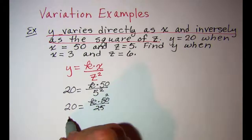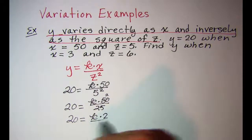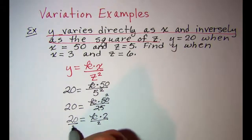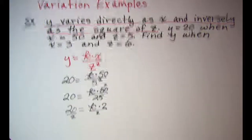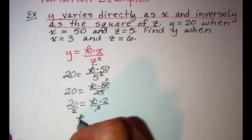So 20 is equal to k times 2, divide both sides by 2, k equals 10.